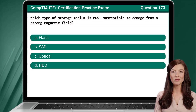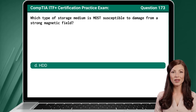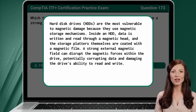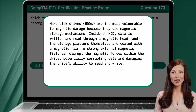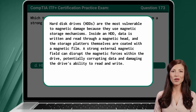Question 173: Which type of storage medium is most susceptible to damage from a strong magnetic field? The answer is D, HDD. Hard disk drives are the most vulnerable to magnetic damage because they use magnetic storage mechanisms. Inside an HDD, data is written and read through a magnetic head, and the storage platters themselves are coated with a magnetic film. A strong external magnetic field can disrupt the magnetic forces within the drive, potentially corrupting data and damaging the drive's ability to read and write.